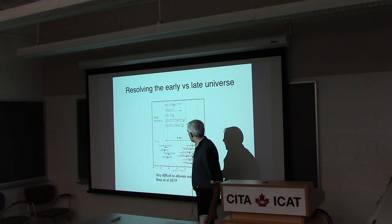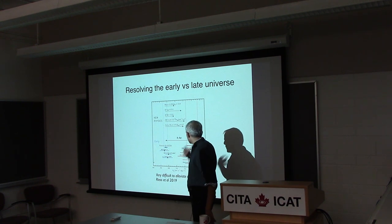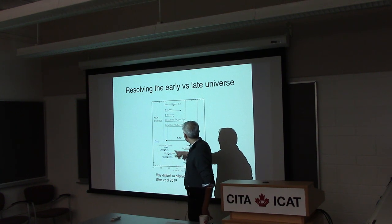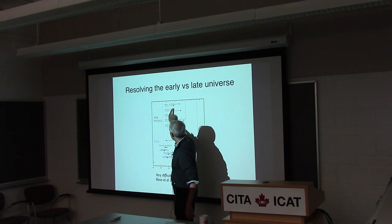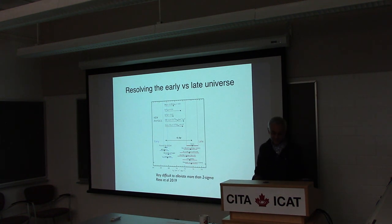Quantitatively, there's a paper — Raveri and Hu looked at other kinds of tensions between cosmology data sets, for particular parameters. They point out the H0 tension and look at many different measures of significance. The H0 tension has grown since they published their paper. All these models, when they look at the other constraints mainly from CMB, can get to 2 sigma, maybe 3 sigma, but it's not easy.